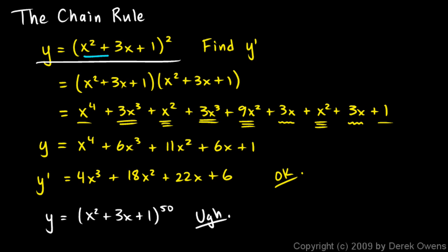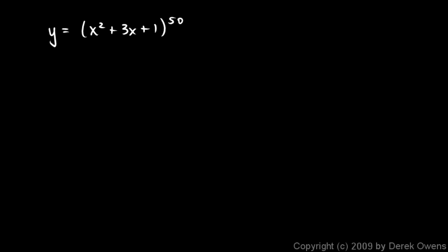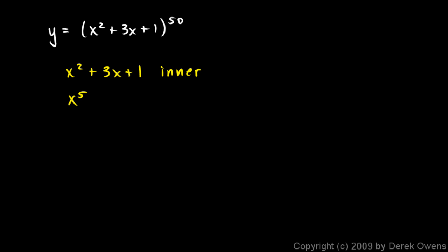It relies on realizing that we have a function within a function. In this case we have x squared plus 3x plus 1, and that whole function is raised to the power of 50. This is what we call a composite function — it's made up of two functions, and in calculus it's common to refer to these as inner and outer functions. If you're given some number for x, you do this in two steps: calculate x squared plus 3x plus 1, and then raise that number to the power of 50. Those are two distinct steps. We think of x squared plus 3x plus 1 as the inner function, and raising something to the power of 50 as the outer function.